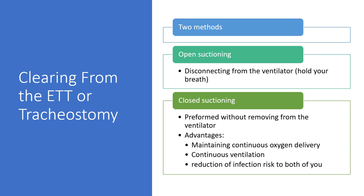There are two methods of clearing secretions from an ET tube or tracheostomy: open suctioning and closed suctioning. Open suctioning involves disconnecting from the ventilator, then using sterile technique to insert a suction catheter, advance it down the airway, apply suction and swirl as you pull out, then reconnect the ventilator circuit.